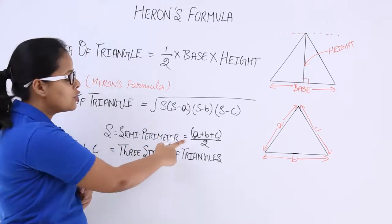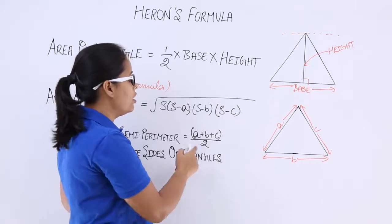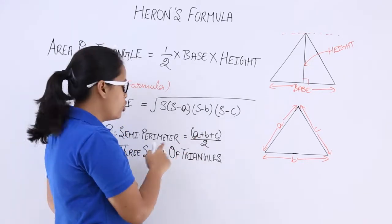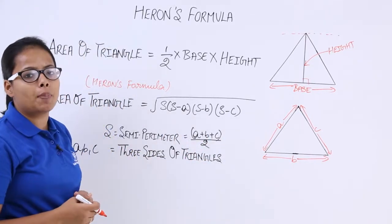This is semi-perimeter. As you already know that when you start walking along the sides of a triangle, that would make a distance of A plus B plus C. So as this is semi, semi means half of this perimeter will become the semi-perimeter.